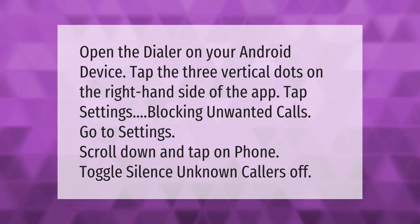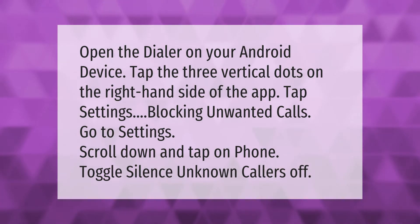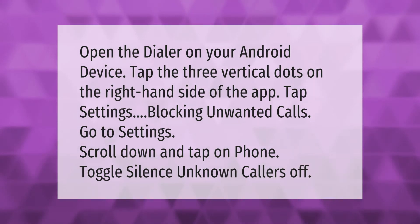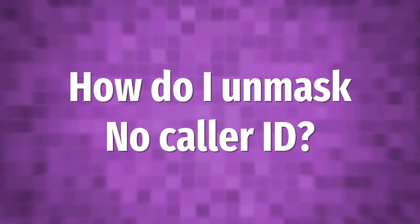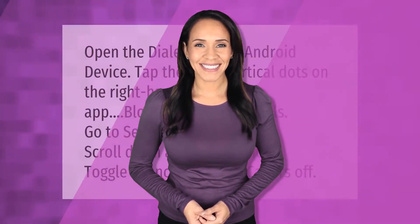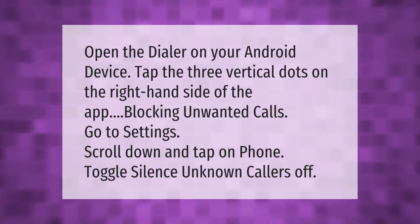Blocking unwanted calls: open the dialer on your Android device, tap the three vertical dots on the right-hand side of the app, tap Settings, then Blocking Unwanted Calls. Go to Settings, scroll down and tap on Phone, then toggle Silence Unknown Callers off.